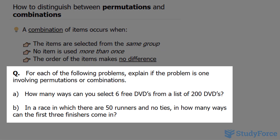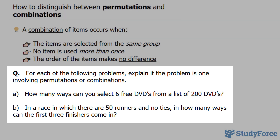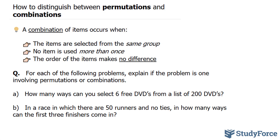The question reads: for each of the following scenarios, explain if the problem is one involving permutations or combinations. We're told: how many ways can you select 6 free DVDs from a list of 200 DVDs?